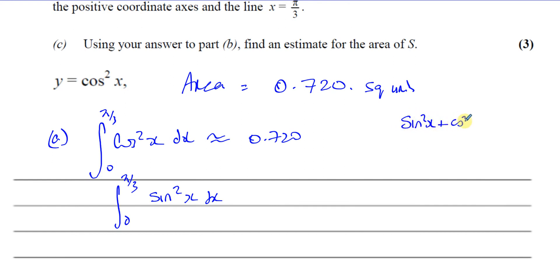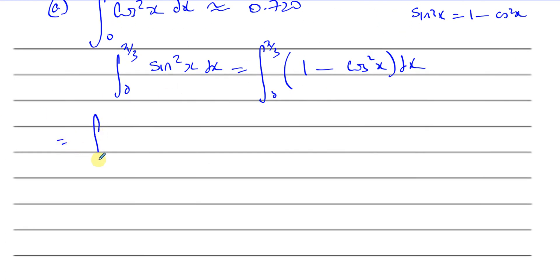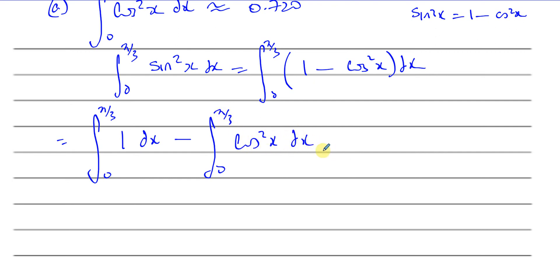We know that sine squared x plus cosine squared x equals one, so we can rearrange to get sine squared x equals one minus cosine squared x. So the integral of sine squared x from 0 to pi over 3 can be rewritten as the integral of (1 minus cosine squared x) from 0 to pi over 3. We split this into two parts — the integral of 1 minus the integral of cosine squared x — which we have an estimate for from part B.